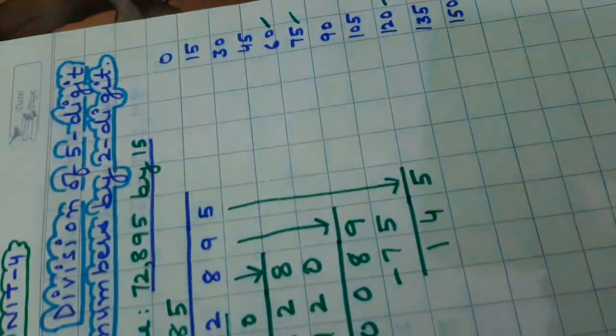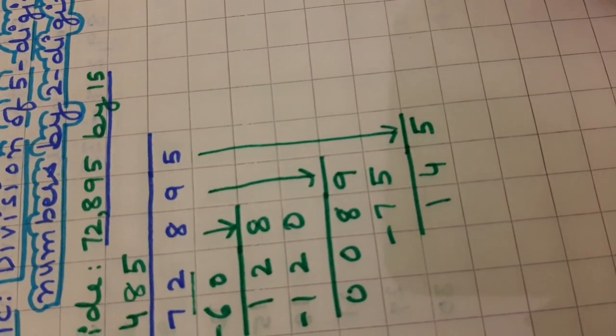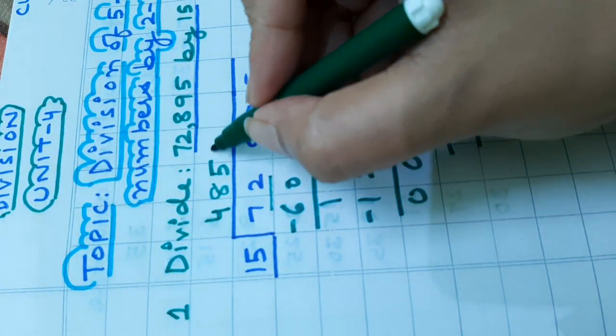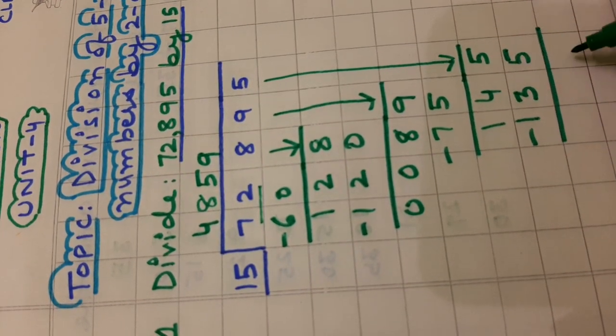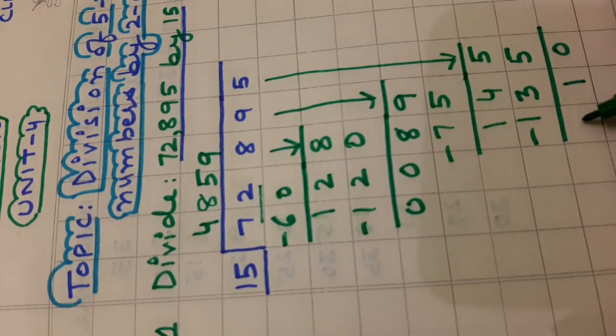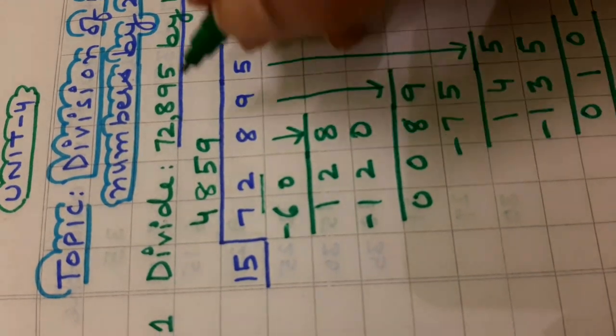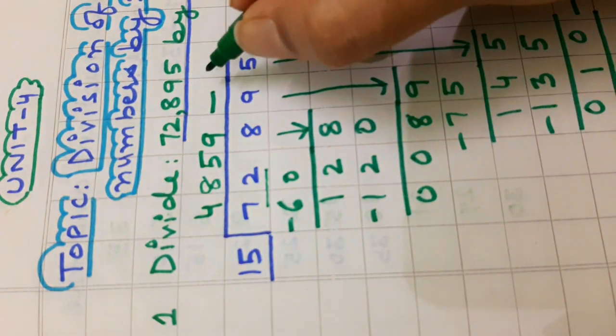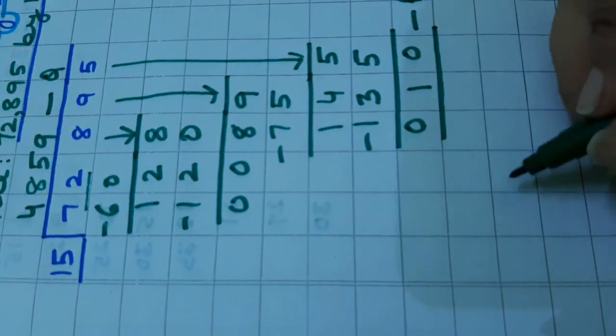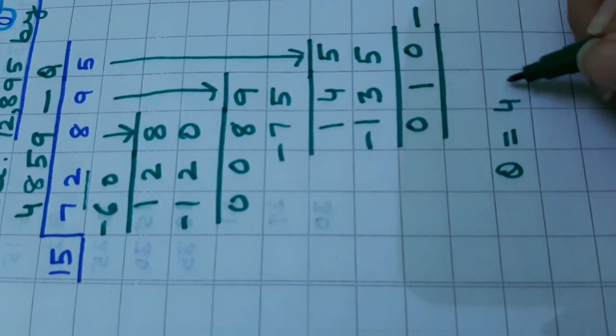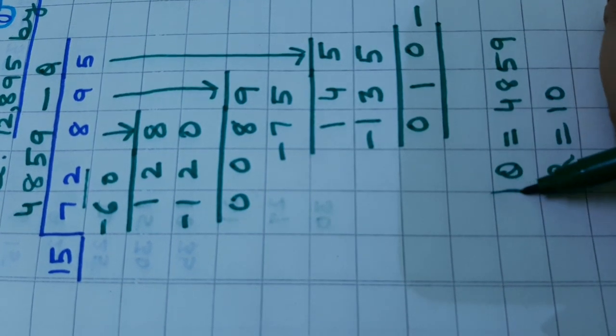Now, we will again find a number which is less than 145 in the table of 15. It is 135. 15 nines are 135. Subtract it. 5 minus 5 is 0. 4 minus 3 is 1. 1 minus 1 is 0. This 10 is our remainder and 4859 is our quotient. We can write it here. Quotient equals 4859 and remainder equals 10. This is your answer.